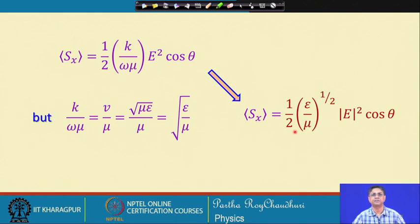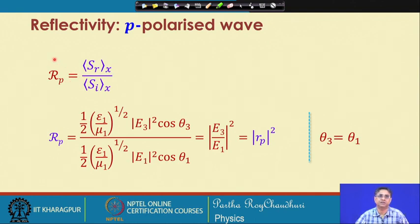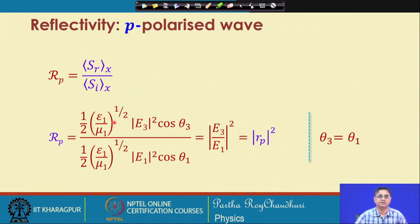We use this expression for S_x for the reflected and transmitted waves to evaluate how much energy is reflected or transmitted at the interface. The energy reflection coefficient can be written using sqrt(epsilon1/mu1) for the reflected wave's time-averaged Poynting vector along x, and the same quantity for the incident wave. Since the incident and reflected waves are in the same medium, epsilon1, mu1 and epsilon3, mu3 are the same.